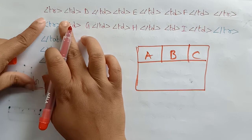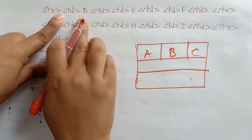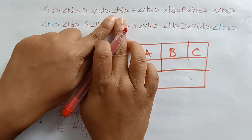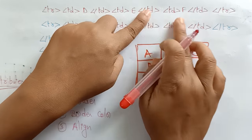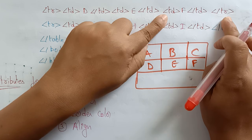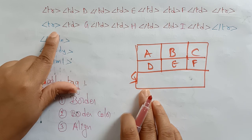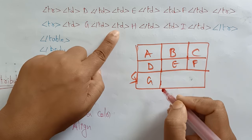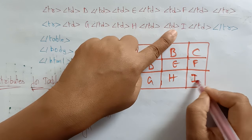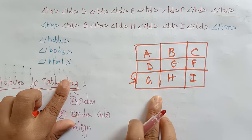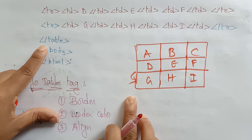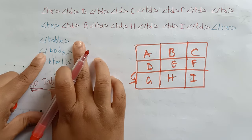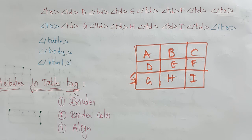Moving to the next row: the first cell is created with D, then E, then F. Whenever I close that row, it shifts to the next row. Then TR starts again — the first cell is G, the second cell is H, the third cell is I. TD is for creating cells. After closing the final row, I close the table. So only three rows and three columns are created. Don't forget to close the table, close the body, and close the HTML. TD, TR, and TABLE are the three terms mostly used; TH is optional.